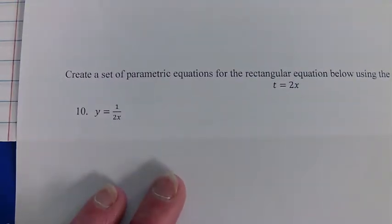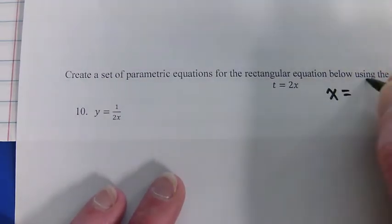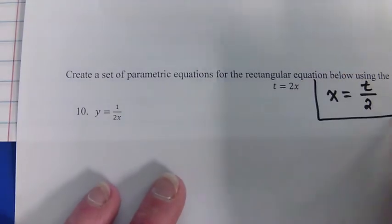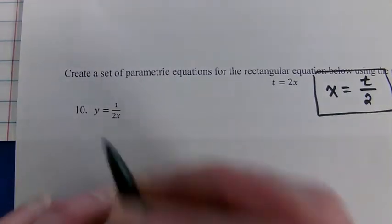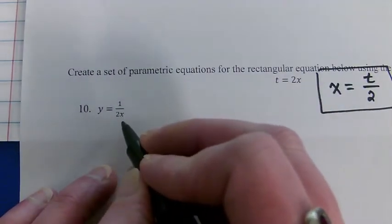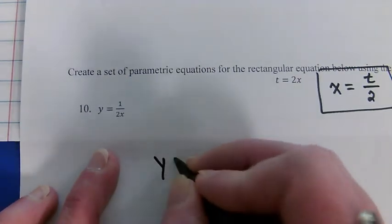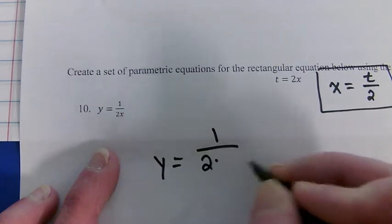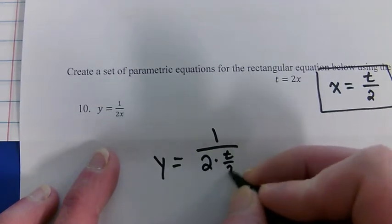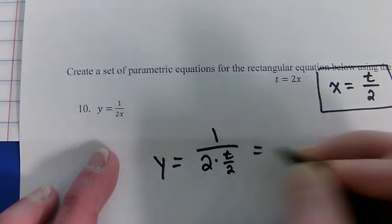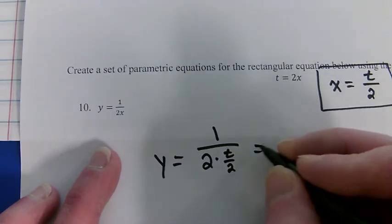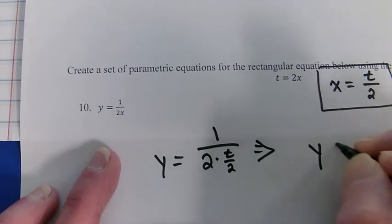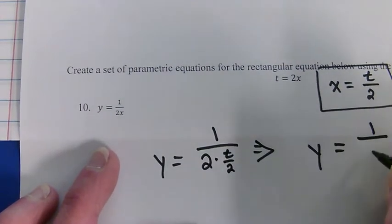t equals 2x. So x equals t divided by 2. Done. y equals 1 over 2x. So y equals 1 over 2 times x, which is t over 2. The 2's would cancel. So y equals 1 over t.